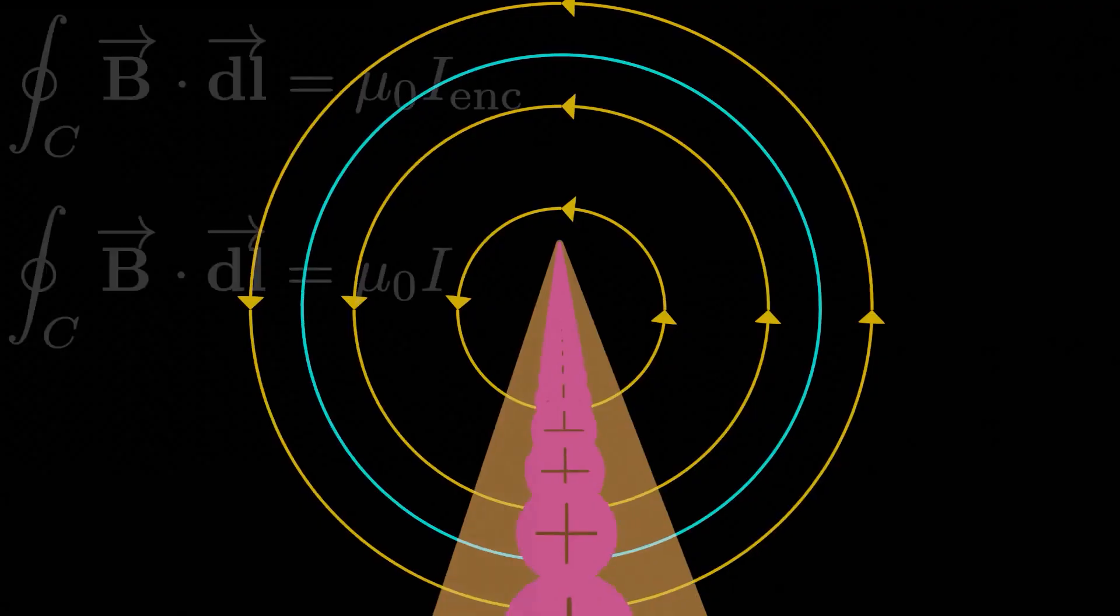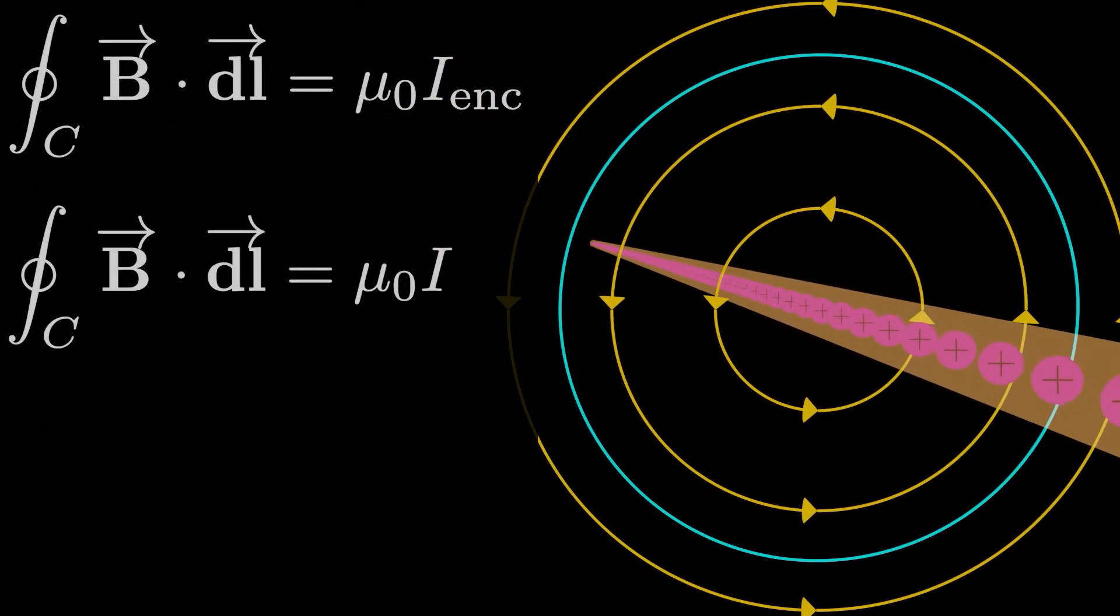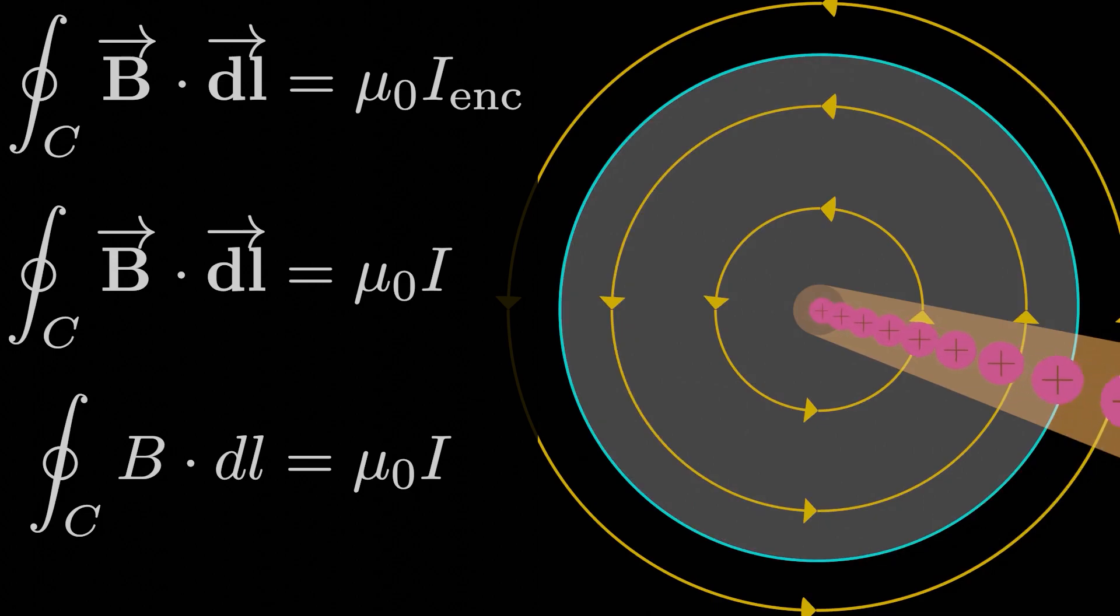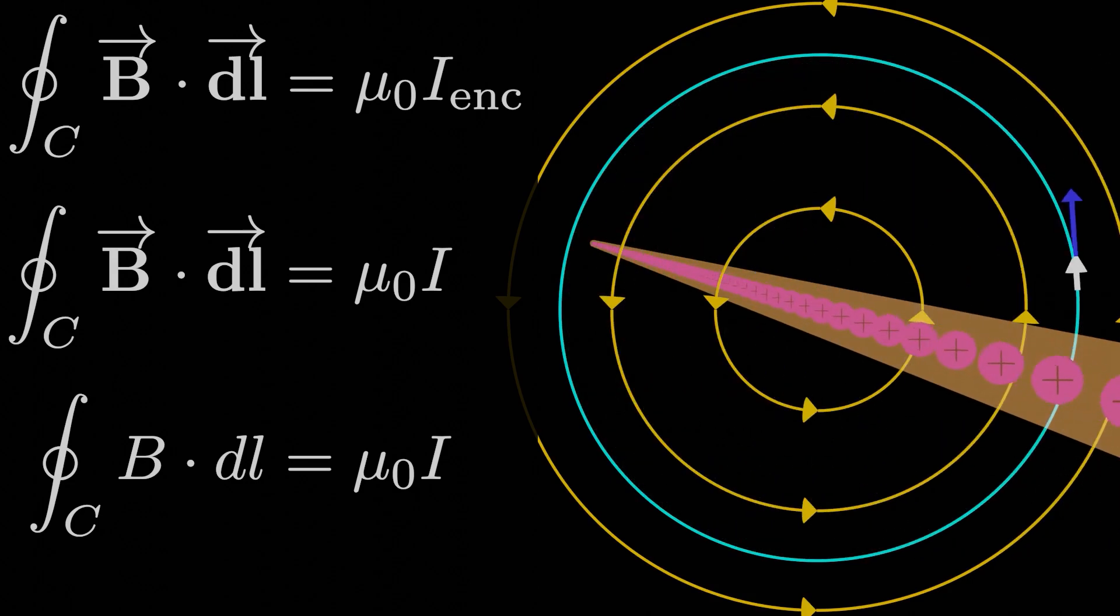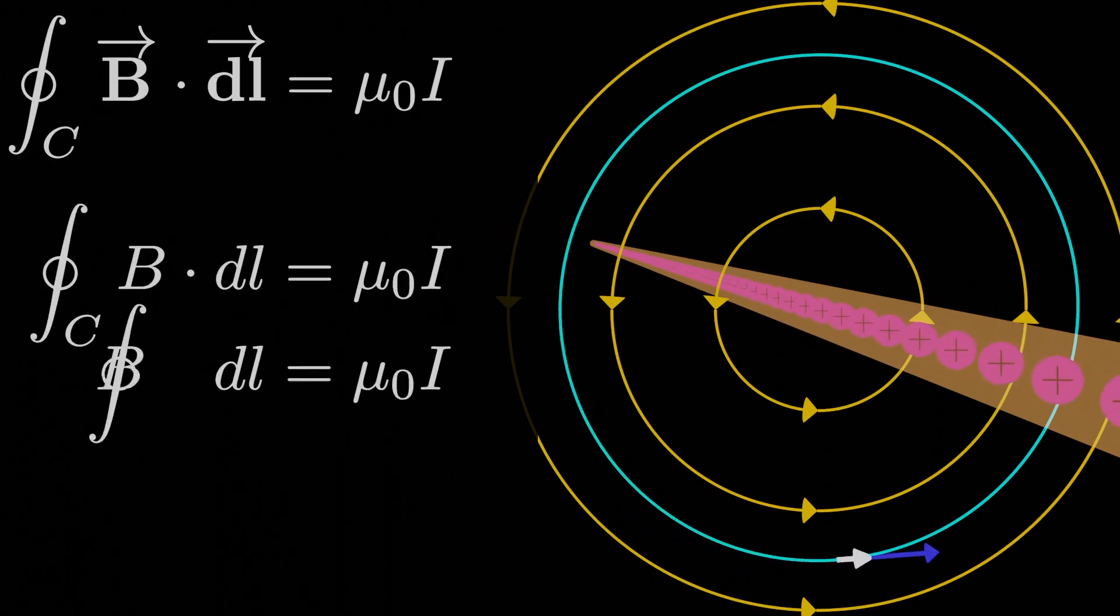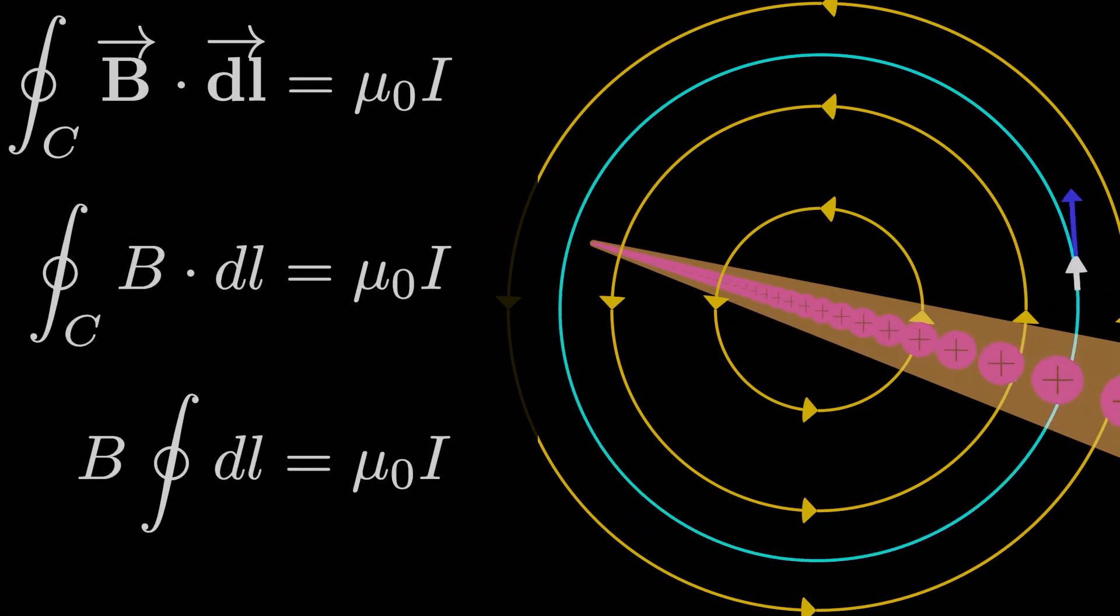So if B is always parallel to DL for this specific loop, we can write the vector B dotted with the vector DL as equal to the magnitude of B times the magnitude of DL. Now before we keep going with the integral, what is the current enclosed by our ampere loop? It's really just the current of the wire itself, I. In this case, all of the wire current passes through the loop, so that current I is the current enclosed by the loop. And if B is constant in magnitude everywhere along the closed curve by symmetry, like it is here, then we can pull B out of the integral and we're left with B times the closed loop integral of DL is equal to mu naught times the current I.